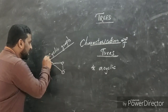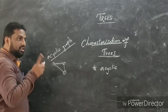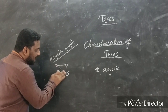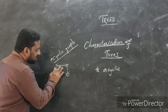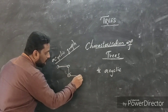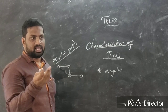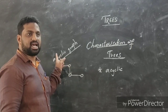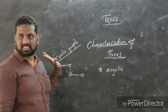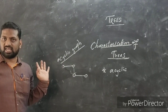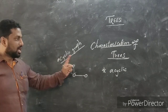Now, an acyclic graph: if the starting point and the terminus point are not equal, then it is said to be an acyclic graph. This is an example of an acyclic graph.